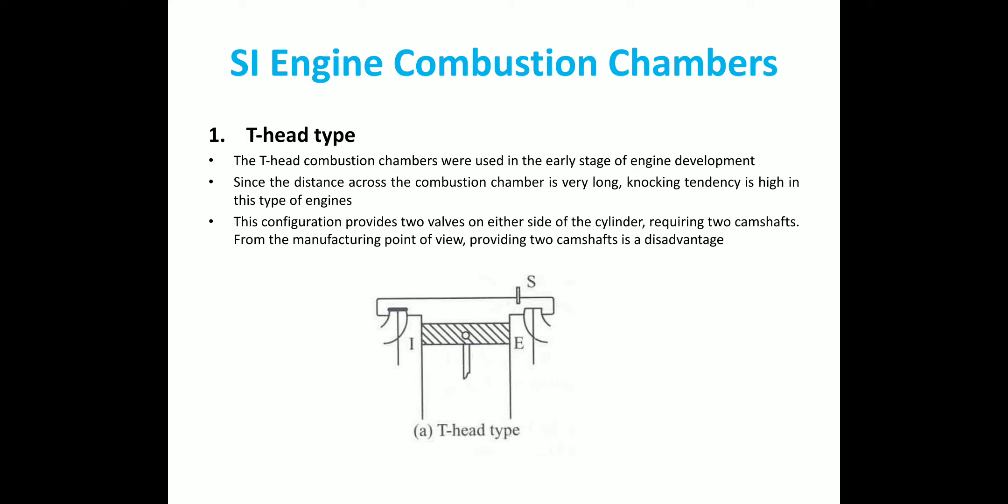Now first going to the T-head type, we can see that in T-head type, the distance across the combustion chamber is very long. So there is a chance of a knocking tendency or knocking tendency is very high in this type of combustion chamber. Also in this type, two valves are placed on either side of the cylinder which requires two camshafts, which are sometimes considered as a disadvantage for this type of T-head type of combustion chamber.